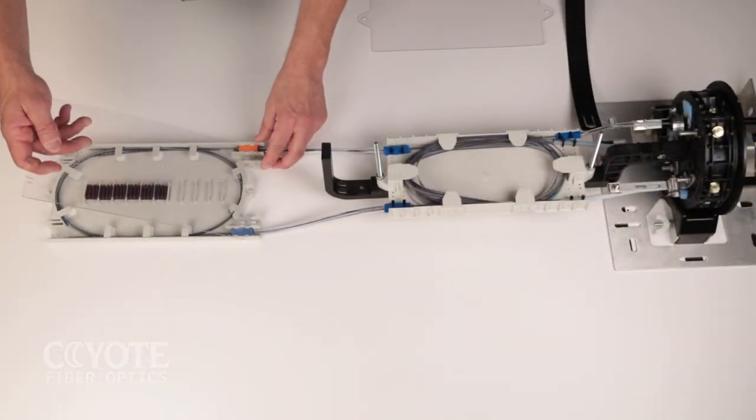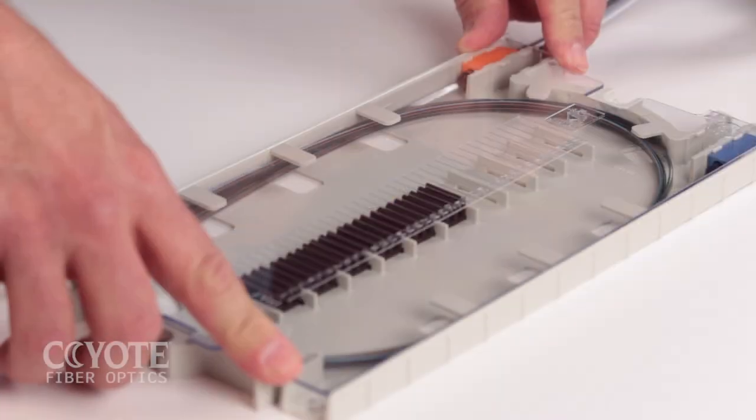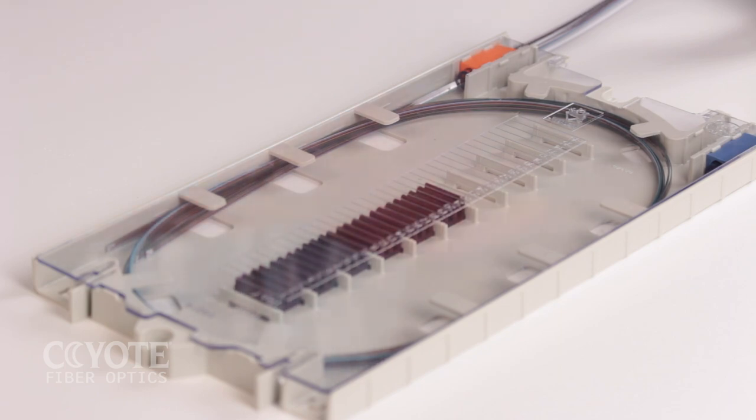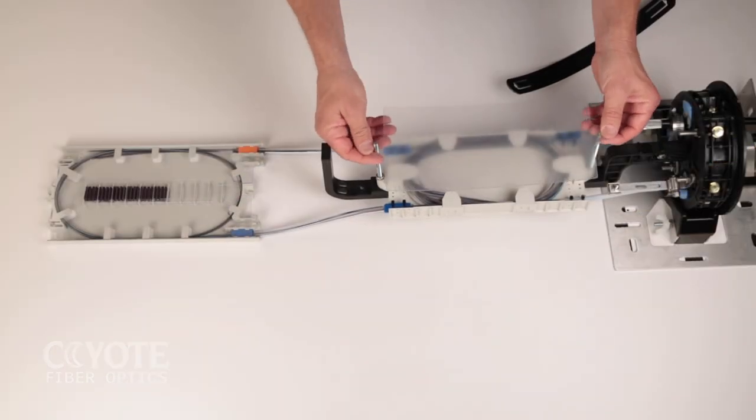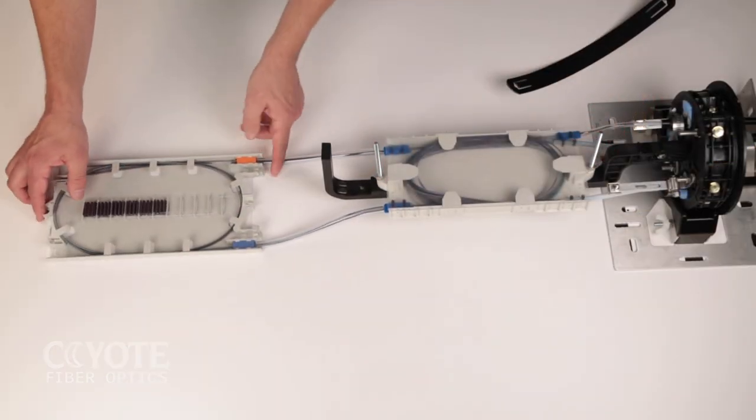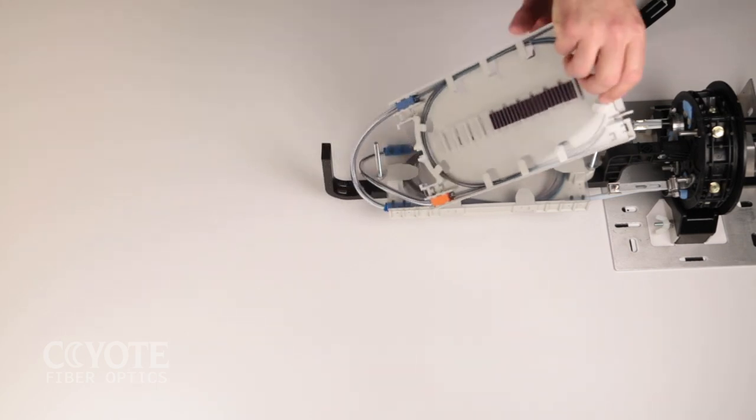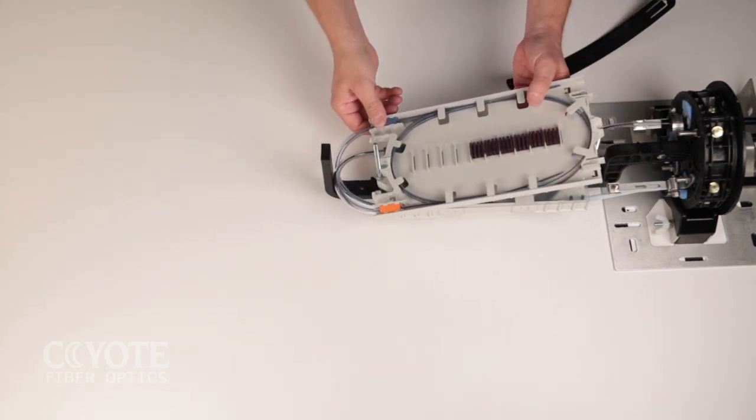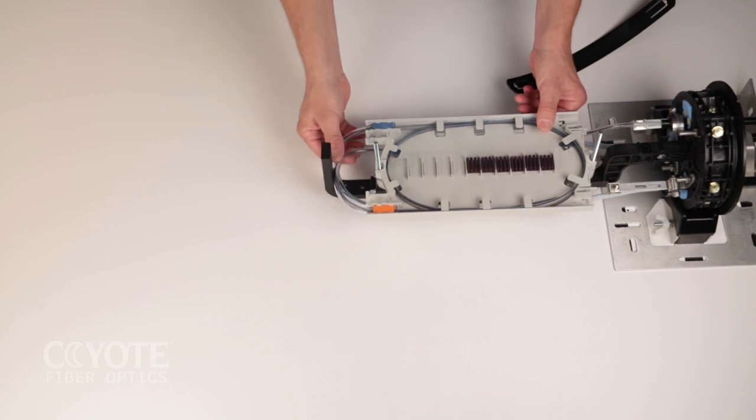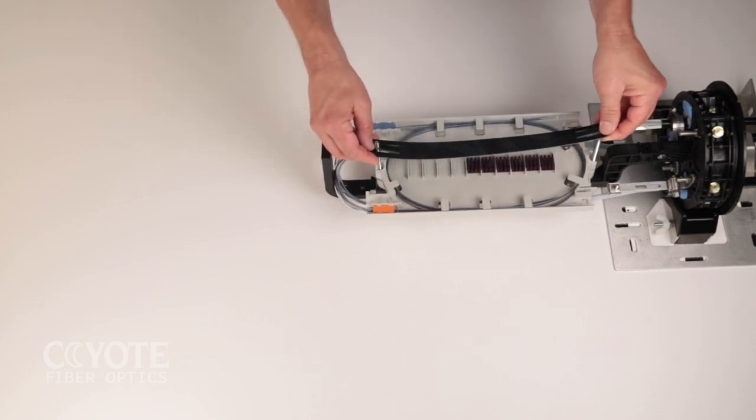Install the cover onto the splice tray. Lift and turn the splice tray to guide it onto the organizer posts. Secure the splice tray with the hold down strap.